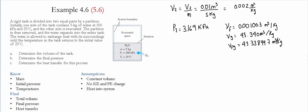The third step is to find the heat transfer for this process. In order to do that we first need to find the quality for the liquid-vapor mixture. Using the specific volumes for the liquid, the vapor, and the difference between them, the quality is equal to the specific volume minus V_F divided by V_FG. For this particular case, substituting the values, the quality is equal to 2.3 times 10 to the negative 5.